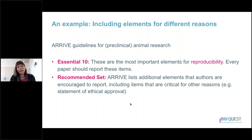The second set is the recommended set — additional elements that all authors are encouraged to report, which include items that are critical for other reasons. For example, the statement of ethical approval appears in the recommended set because it's important for assessing compliance with regulations, although it's not necessarily essential for reproducibility, so it's not in the Essential 10.